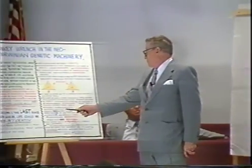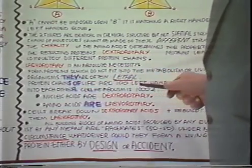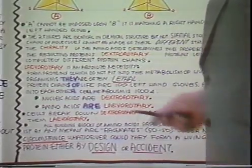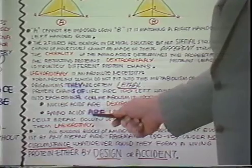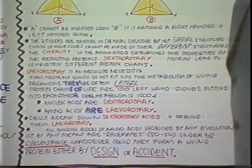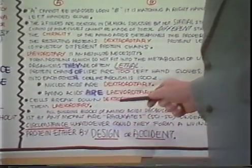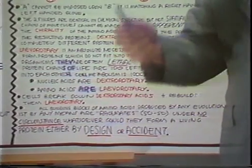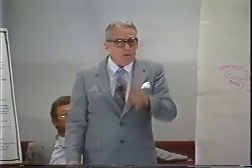If you get the wrong chirality in there, you don't get the protein. Proteins which do not fit in the metabolism of living organisms are often lethal. Protein chains of life are a hundred left-hand gloves fitting into each other. Nucleic acids are dextrorotary — wrong kind. Amino acids are levorotary — right kind. The cells break down the wrong kind, dextrorotary, and rebuild them into levorotary, the right kind. The cells do that, but the cells are alive. Nothing inorganic can do it. Therefore the only way you can produce life is with life.